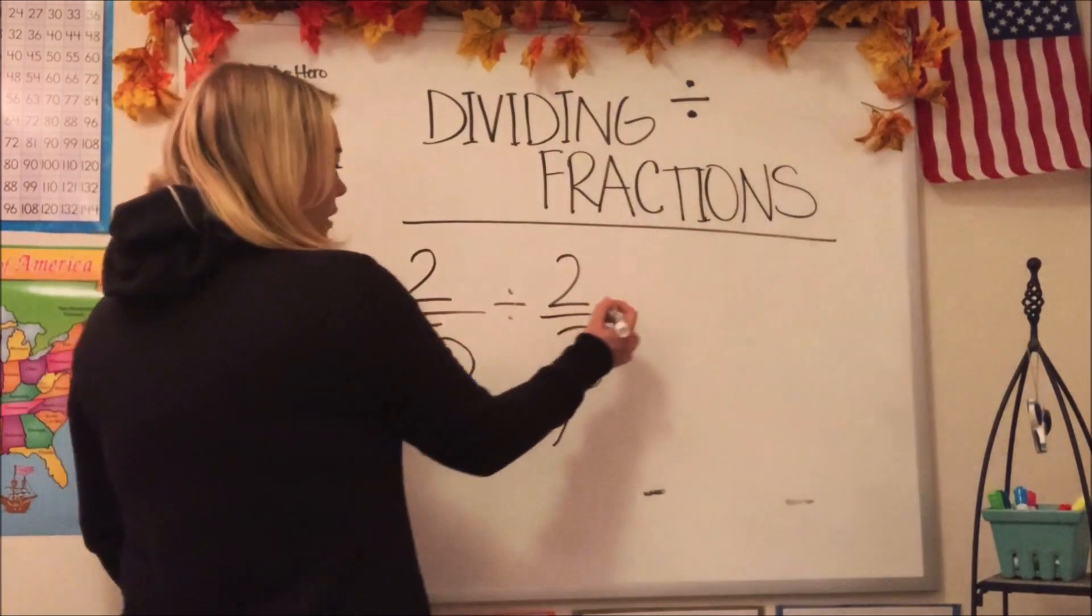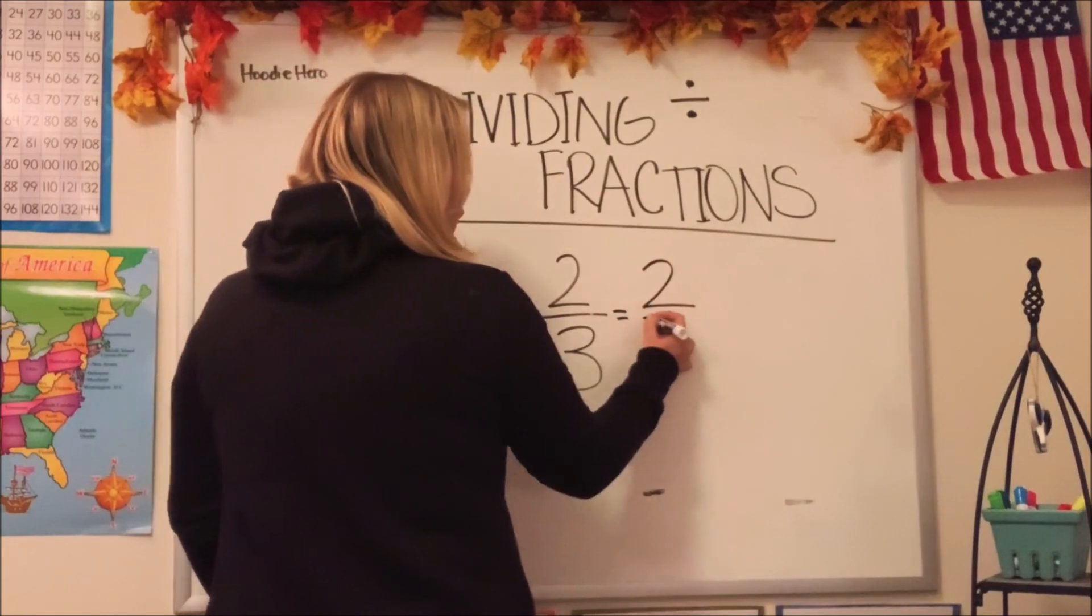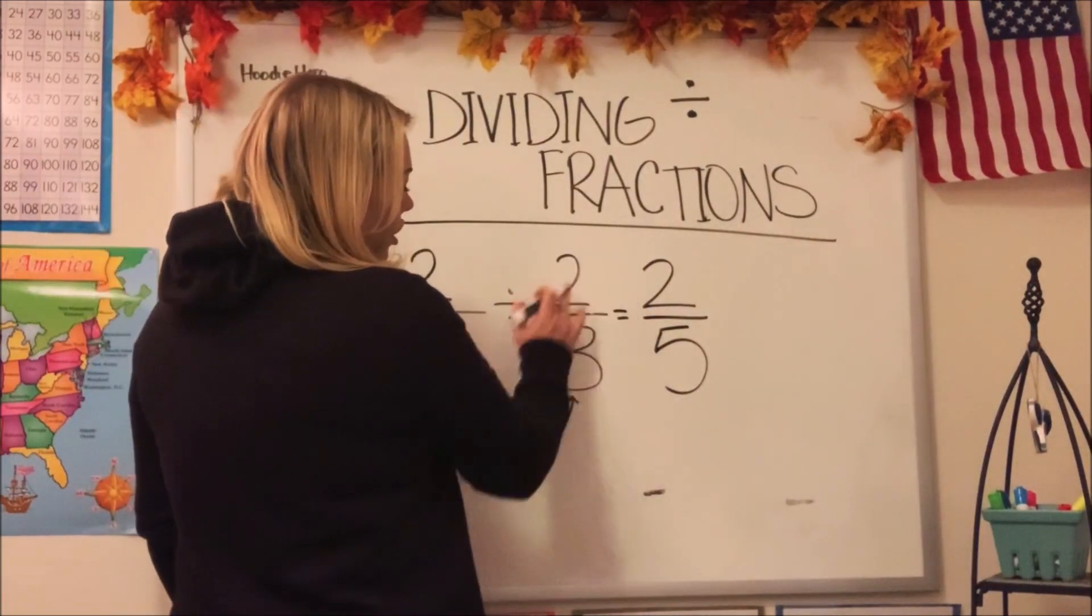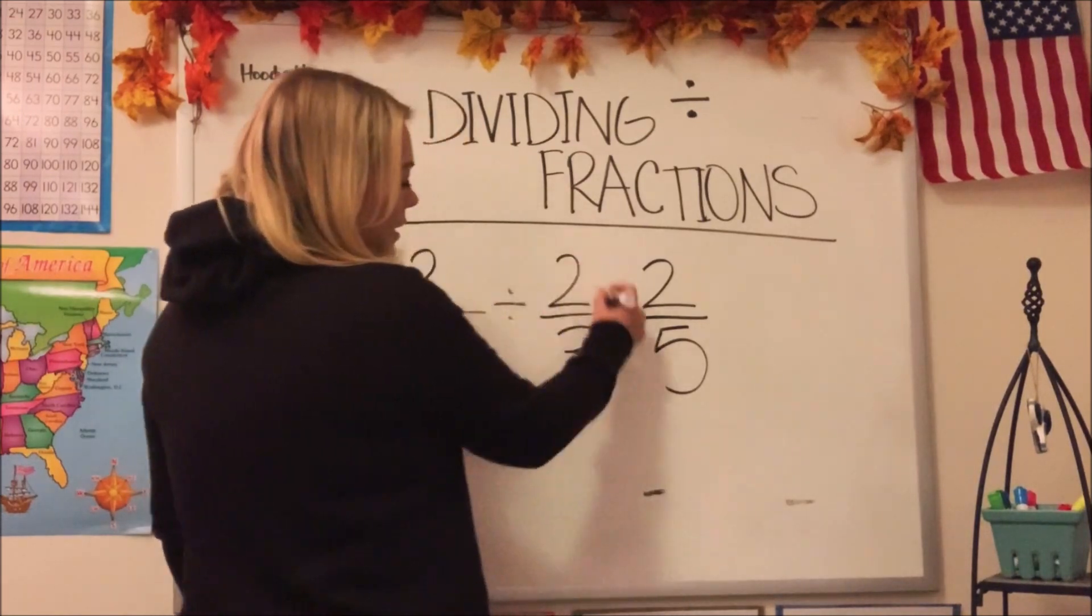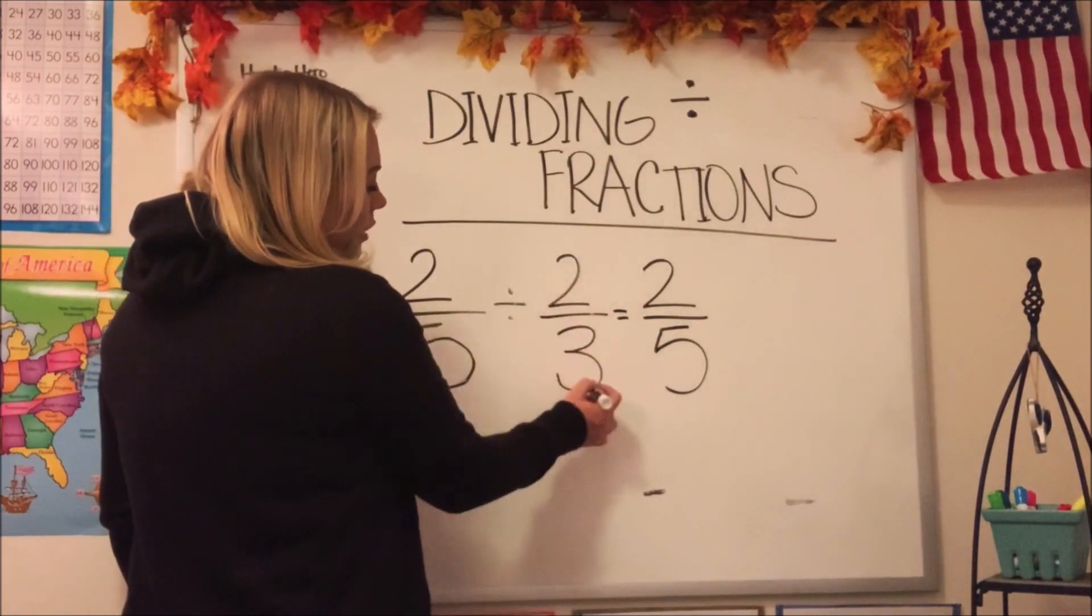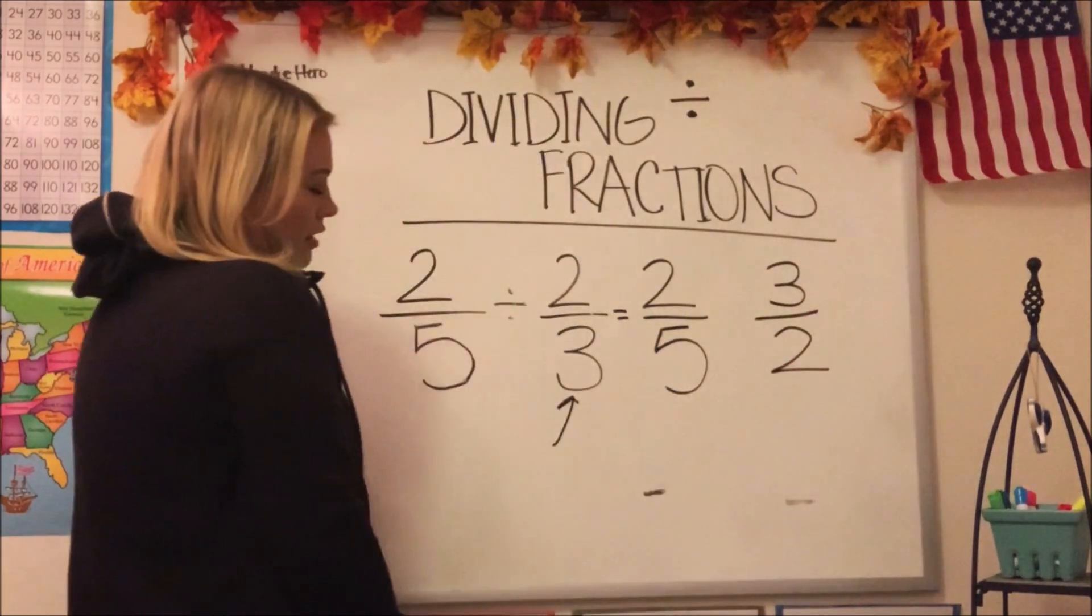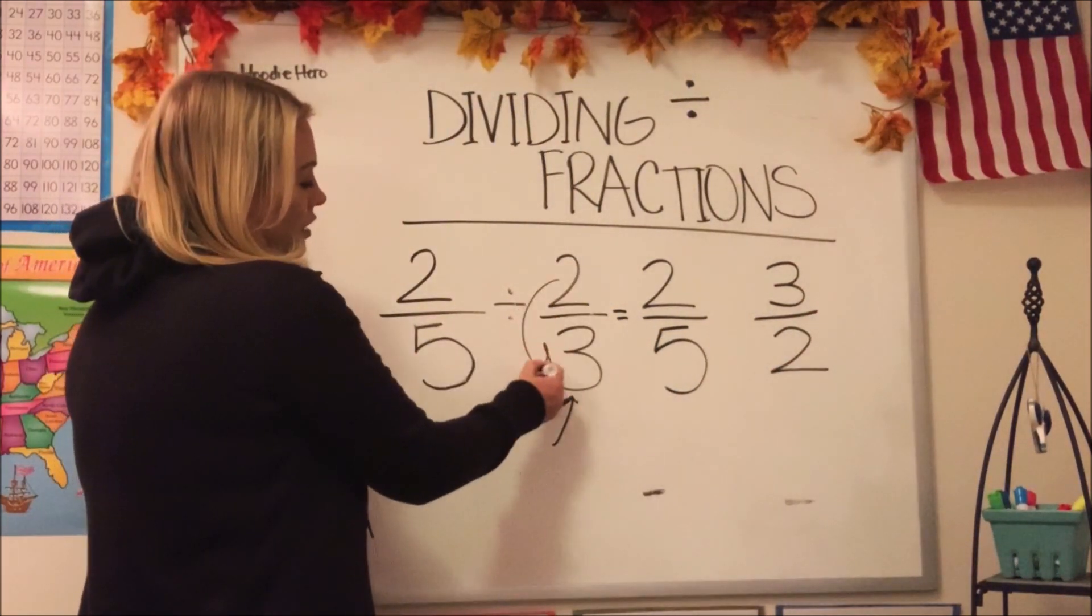So let's go ahead and rewrite this. We're going to keep the first fraction the same. But we're going to invert the second one, do the reciprocal of it. So we're going to put three as the numerator and two as the denominator. See how we just switched that around?